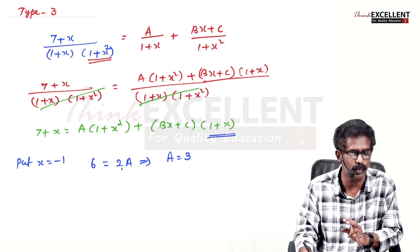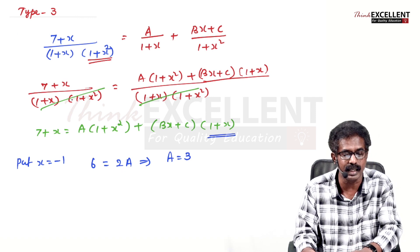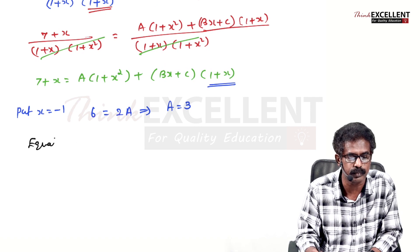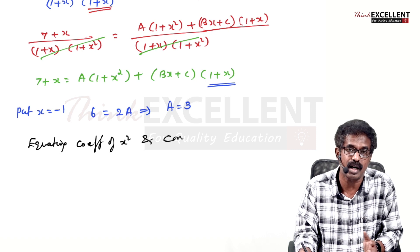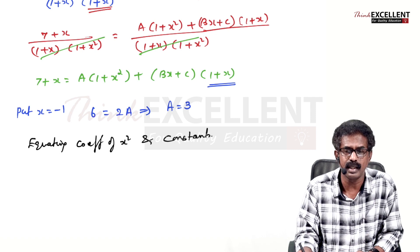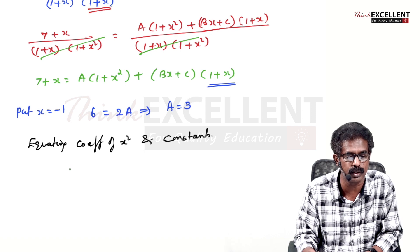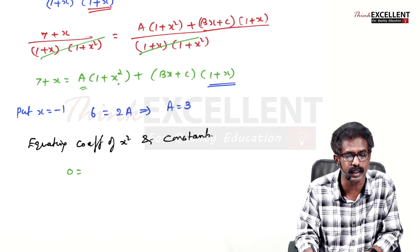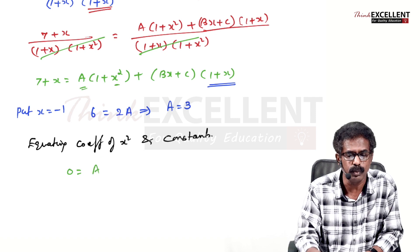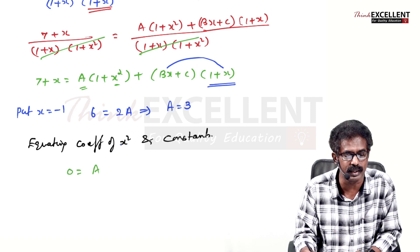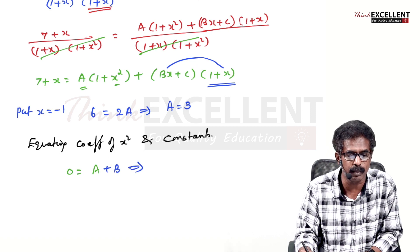There are no other factors, but we still have two unknowns. Equate the coefficients of the highest power, which is x². Left side has no x² term, so coefficient is 0. Right side: from A(1+x²) the coefficient of x² is A, and from (Bx+C)(1+x), multiplying Bx by x gives Bx², so coefficient is B. Therefore 0 = A + B, so B = -A = -3.